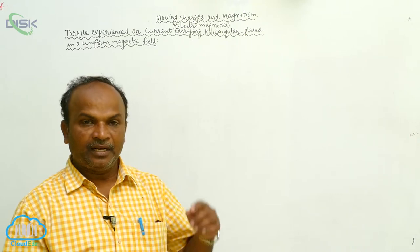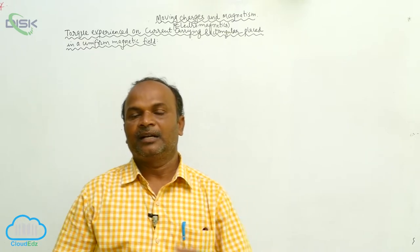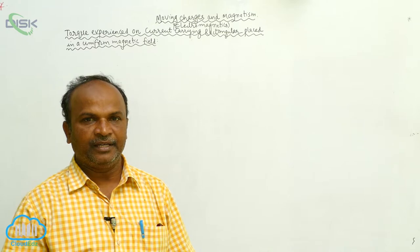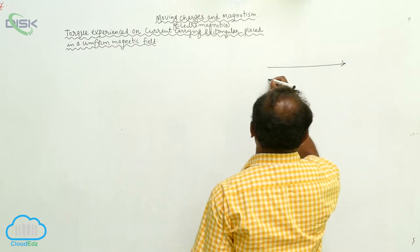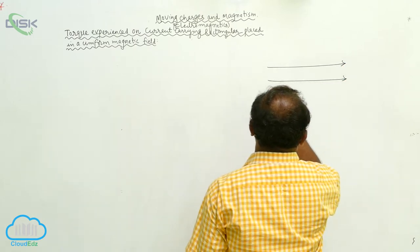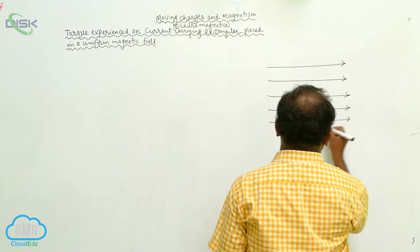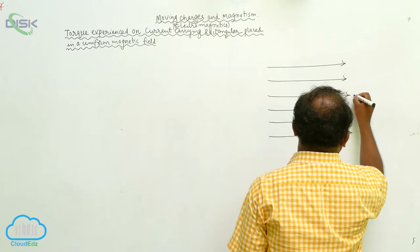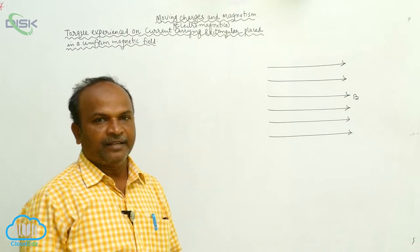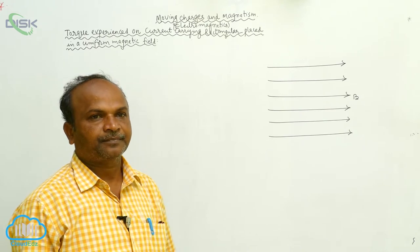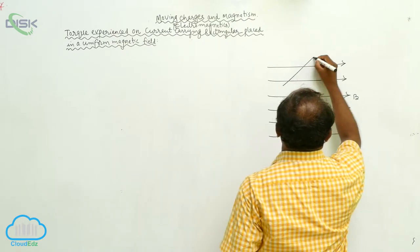The conductor is placed in the uniform magnetic field; here the rectangular coil is placed in the uniform magnetic field. Let us consider this is the uniform magnetic field. In this uniform magnetic field we are placing a current-carrying rectangular coil. This is the rectangular coil.